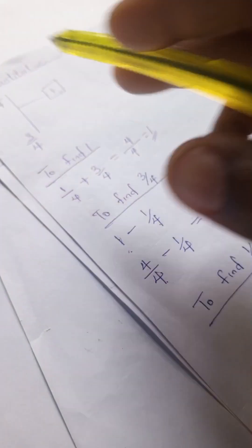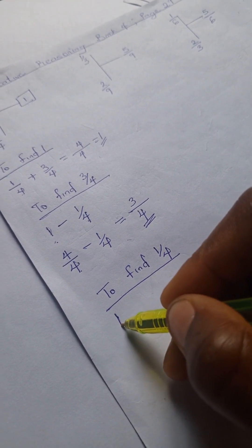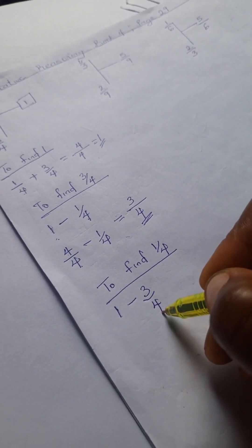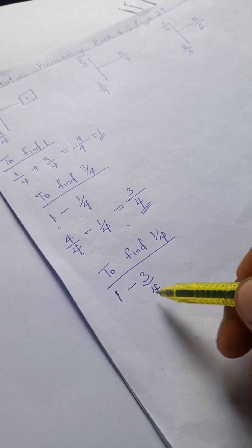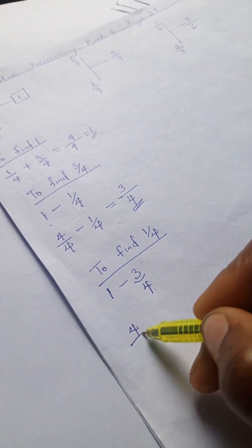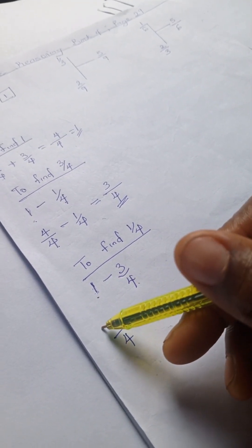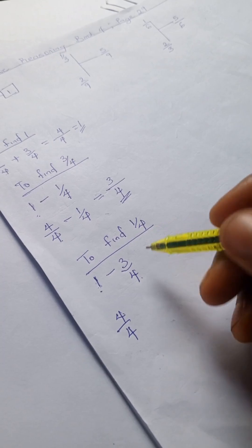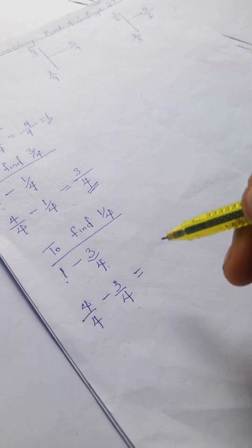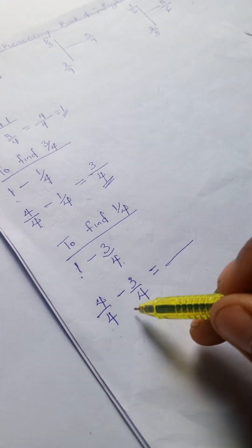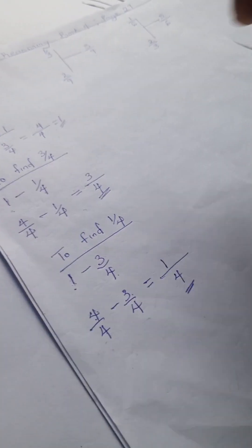To find 1/4, we're going to have 1 minus 3/4. Remember, when you have a whole number as a fraction, 1 is the same as 4/4. So we have 4/4 minus 3/4. When you subtract fractions with like denominators, you simply pick one denominator. So 4 minus 3 gives us 1, and we have 1/4.